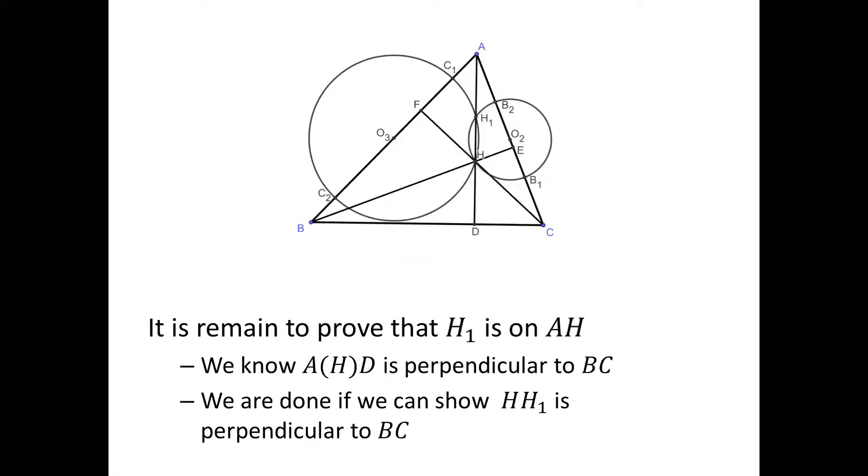It remains to prove that H1 is on line AH. We know AH is part of the altitude AD and AD is perpendicular to BC. So if we can prove that H1H, the common chord of the two circles, is also perpendicular to BC, then we are done.